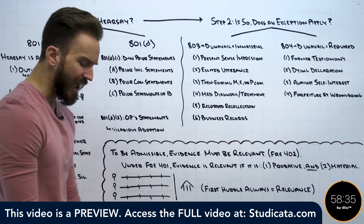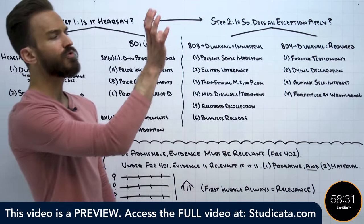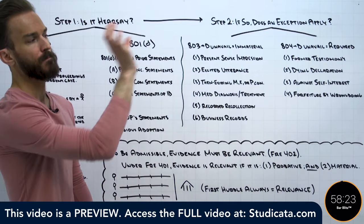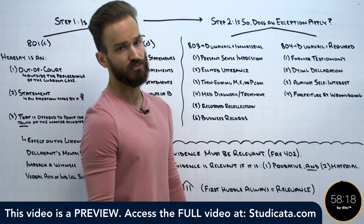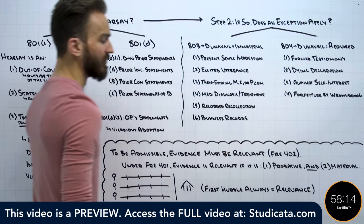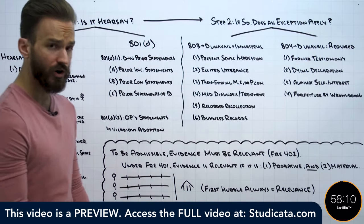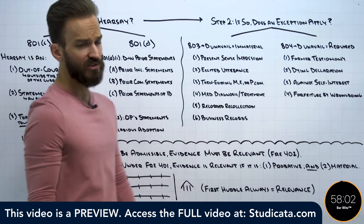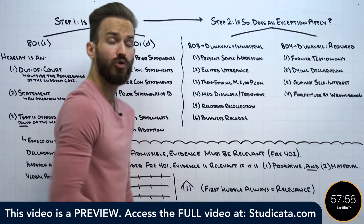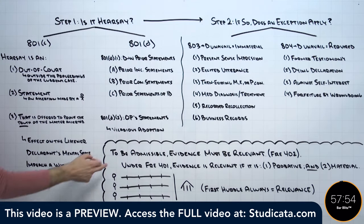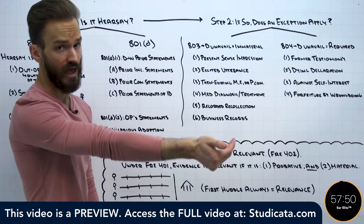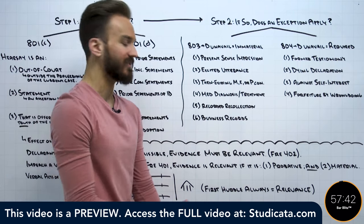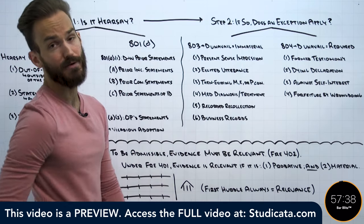If you see evidence tested on the essay portion of the bar exam, the way you structure your essay follows this analogy. Each header will be a different piece of evidence, and your main issue under each header is going to be whether the evidence is admissible. All of your subheaders are just going to be the different rules of evidence. If a piece of evidence gets over all the hurdles it needs to get over, your conclusion will be that it is admissible. If it hits a hurdle and can't get over it — it violates the rule — then that piece of evidence is not admissible.